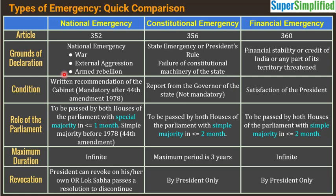For national emergency, there should be a written recommendation of the Cabinet, which is sent to the President, and based on that only the President can invoke national emergency. Before 1978, this provision did not exist. When former Prime Minister Indira Gandhi declared national emergency, since this provision was not in place, the Prime Minister herself decided to impose it, communicated it to the President, and the Cabinet was informed only afterwards.